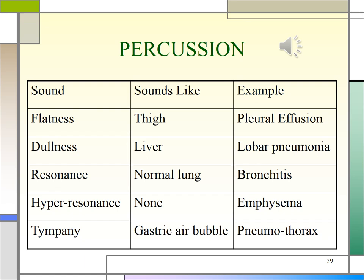Characteristics of the different sounds: flat sounds are short, soft, high-pitched, heard over bone or muscle, and indicate consolidation when heard over the chest. Dull is a thud-like sound heard over solid organs such as the liver, but may indicate fluid in the lung as with pneumonia. Resonance is a long, low-pitched, slightly hollow sound, typically heard over the lungs and may indicate bronchitis. Hyper-resonance is a very loud, lower-pitched sound, typically heard over the stomach, and may indicate hyperinflated lungs as with emphysema or pneumothorax. Tympani is a loud, high-pitched, drum-like sound heard over a puffed-out cheek, and indicates excessive air as in a large pneumothorax.